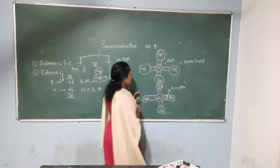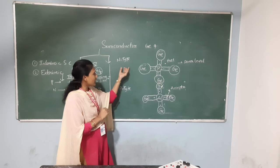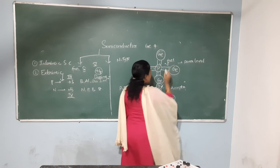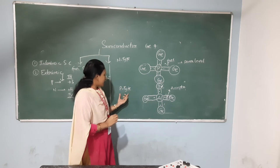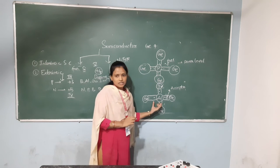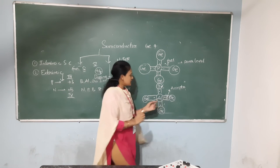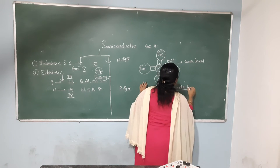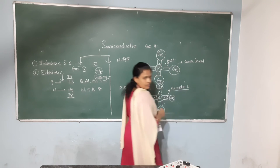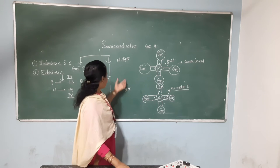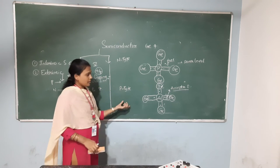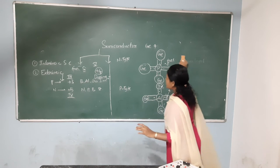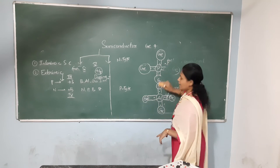In N-type semiconductors, the majority charge carriers are electrons. In P-type semiconductors, the majority charge carriers are holes. This is the acceptor level of the energy gap. This is the summary of P-type and N-type semiconductors. Next, we will discuss the energy levels of P-type and N-type.